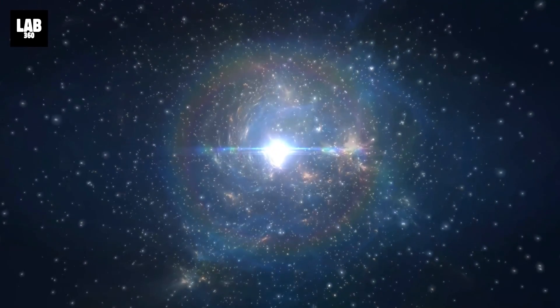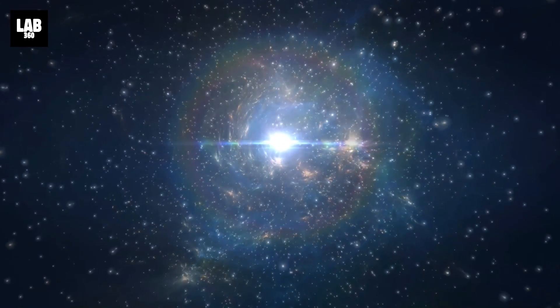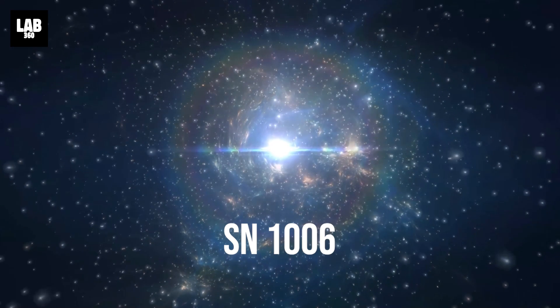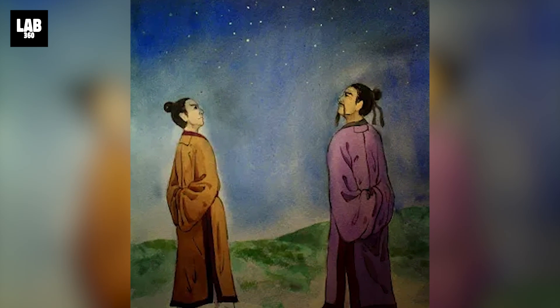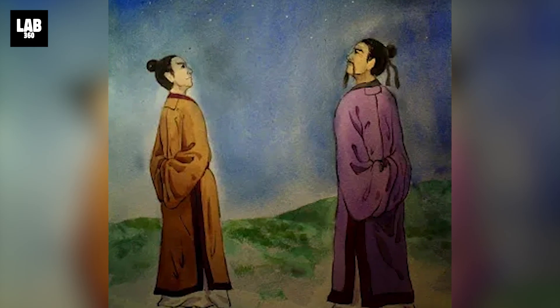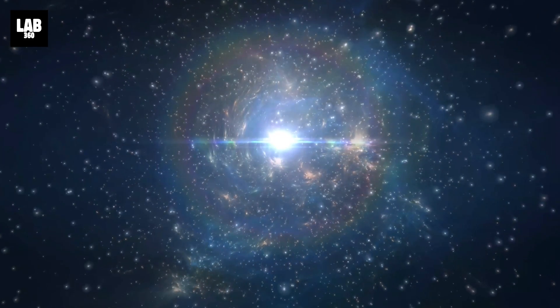The brightest recorded supernova, SN 1006, was seen in 1006 AD by people in China, Japan, Iraq, Egypt, Italy, and Switzerland. It was the first certain detection of a supernova.